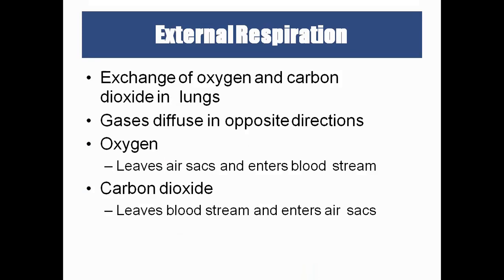To understand external and internal respiration, draw three rectangular boxes one below the other. Write 'lungs' in the first box, 'blood' in the second box, and 'body/cells/tissues' in the third box. Then draw an arrow from lungs to blood.